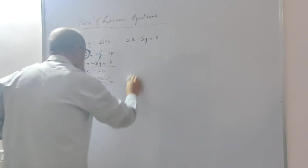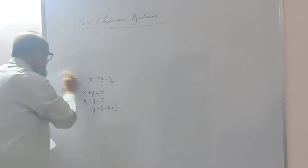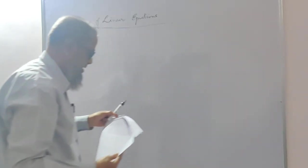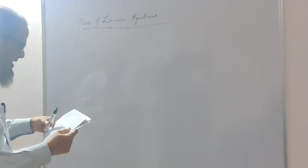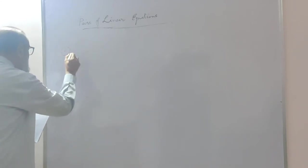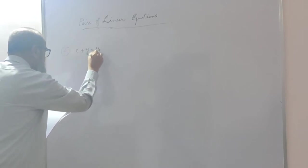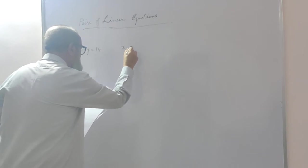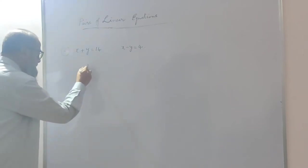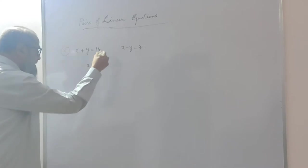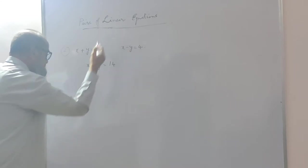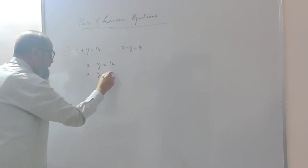I have 3 papers and will solve 3 problems. The second problem is: find the solution for the pair of linear equations. x plus y is equal to 14, and x minus y is equal to 4. This is a very simple problem, also for 2 marks. There is no need to multiply by anything because the coefficient of y is 1 in both equations.